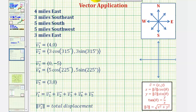Finally, for the last part of the walk, the person walks three miles east, or three miles in this direction, so the x component would be positive three and the y component would be zero.